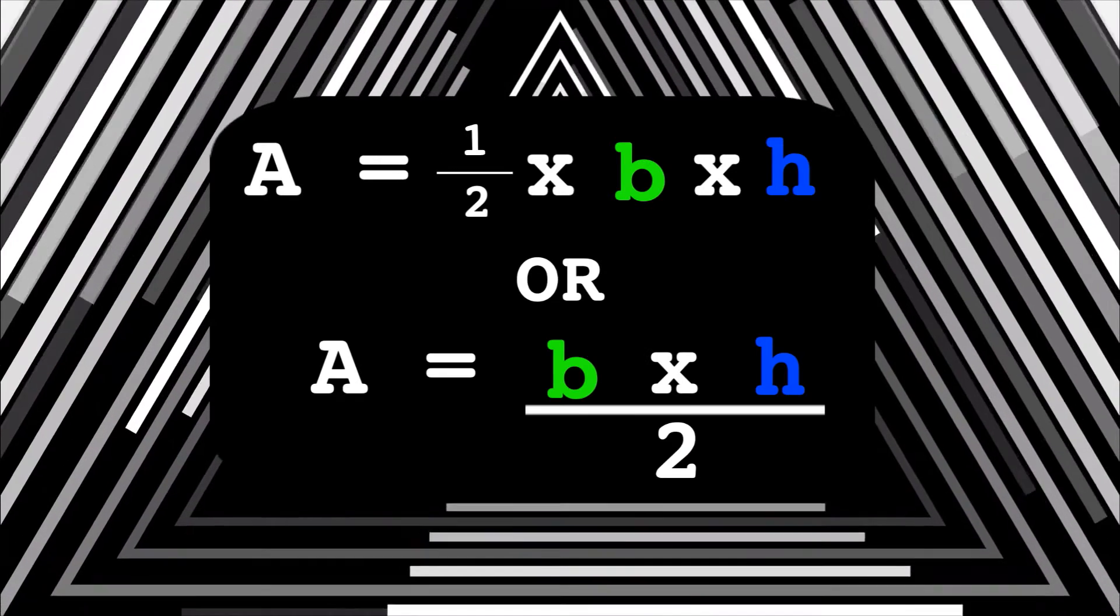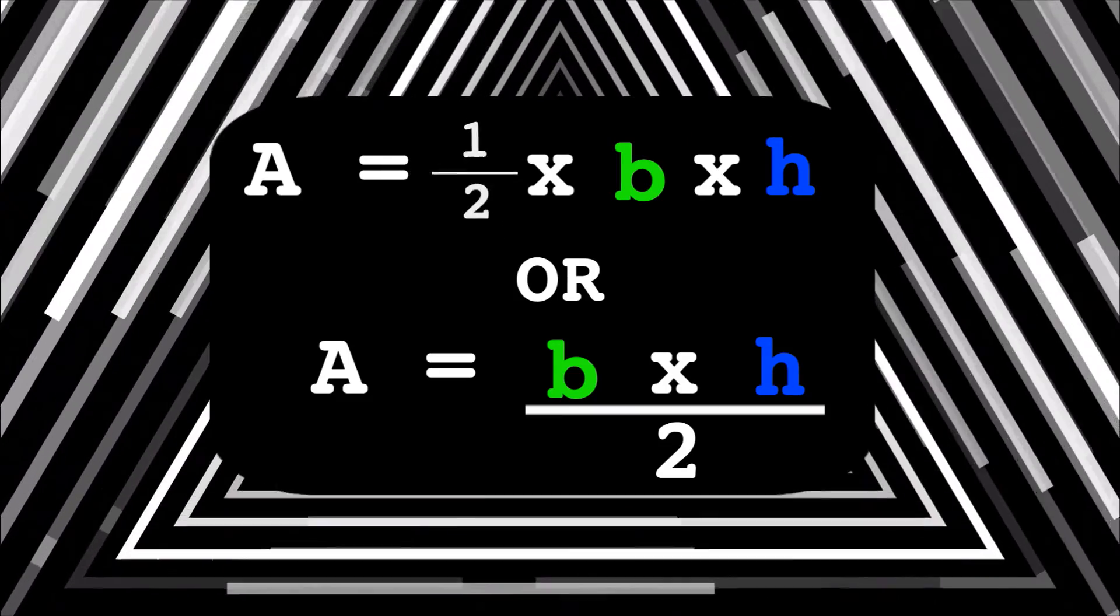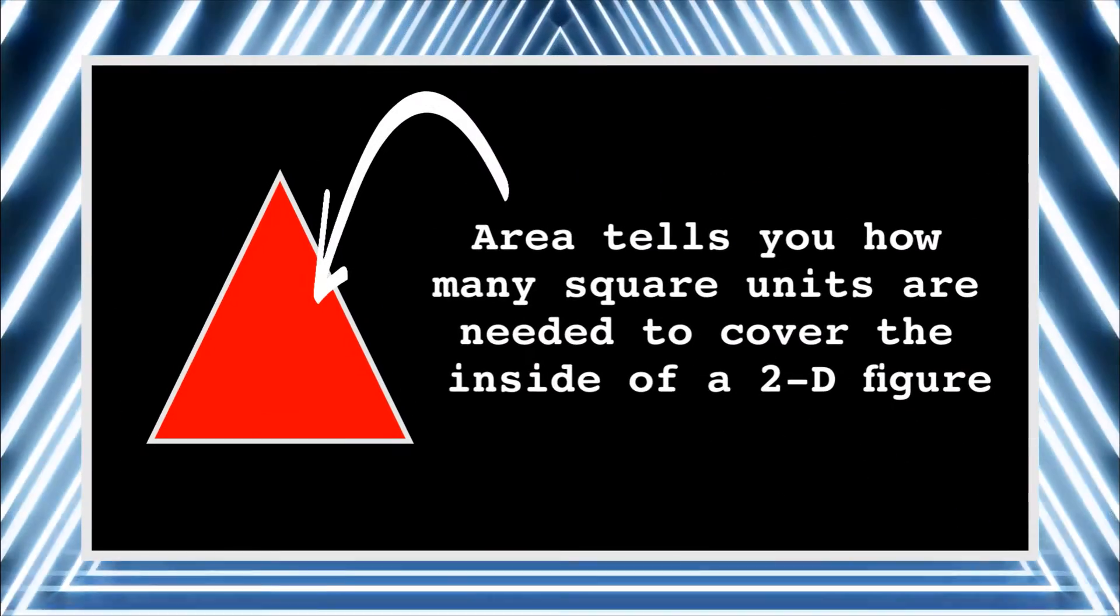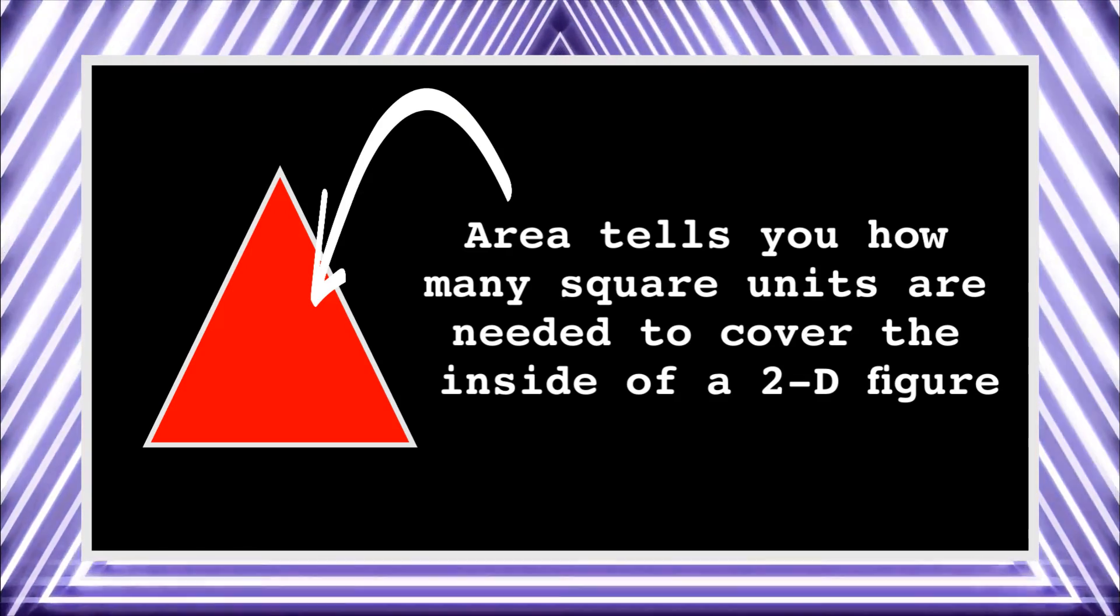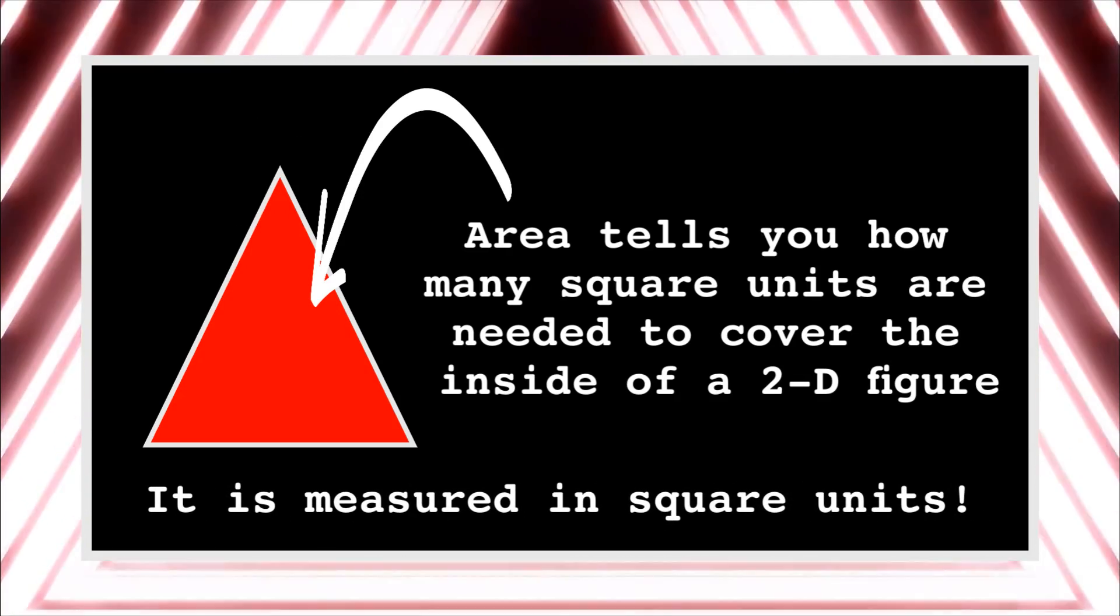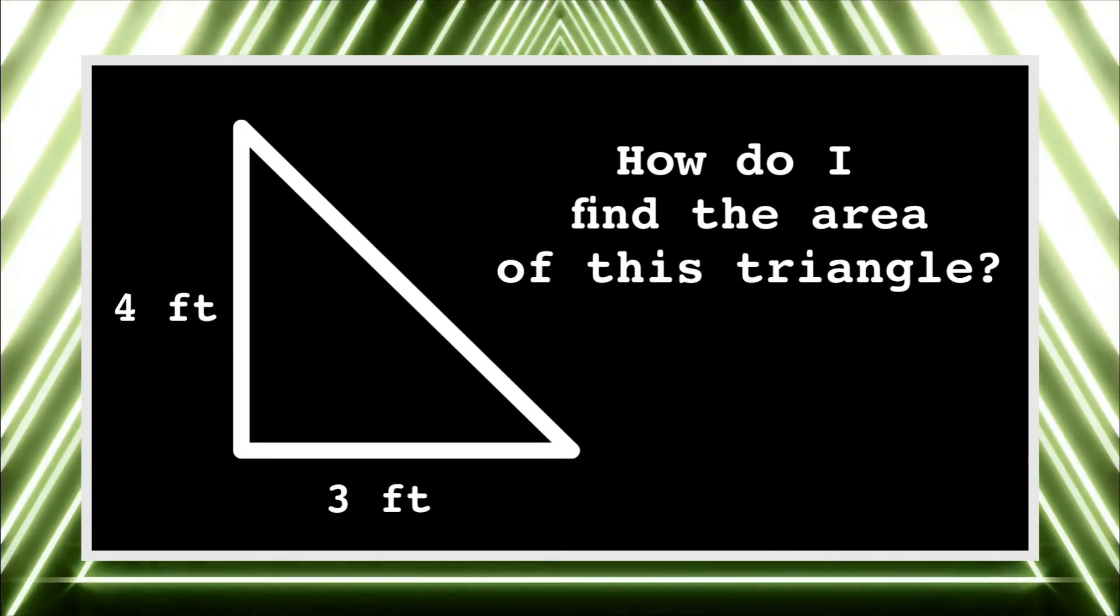Find the area of a triangle: take one half times base times the height. It tells you the space inside. Area is the skill to have in mind.